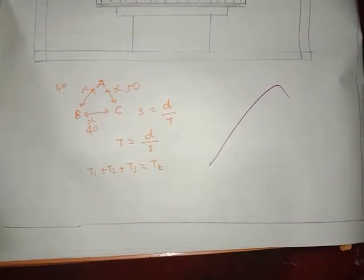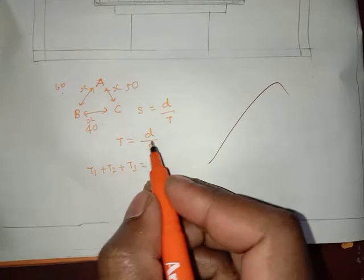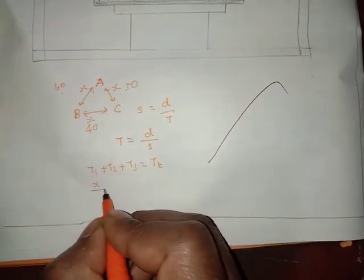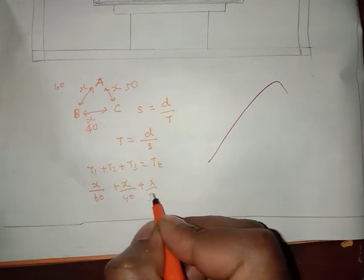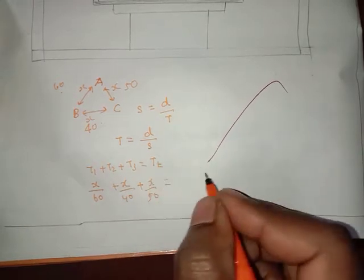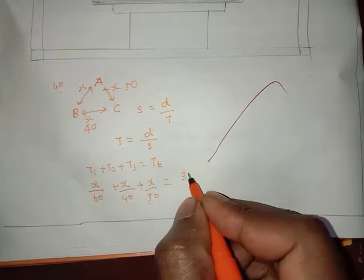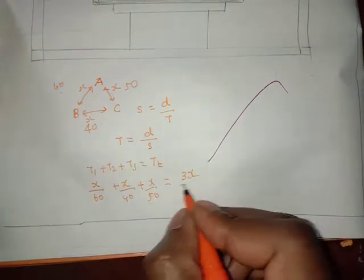This is equal distance by time. Now, we can set distance as x. X by 60, x by 40, x by 50 for total time. Total distance is 3x, x plus x plus x equals 3x, divided by